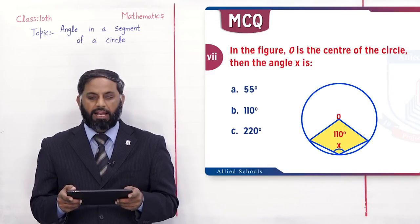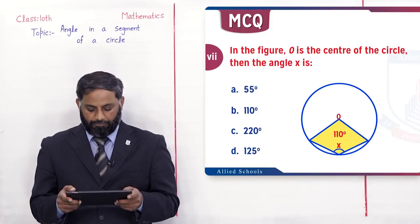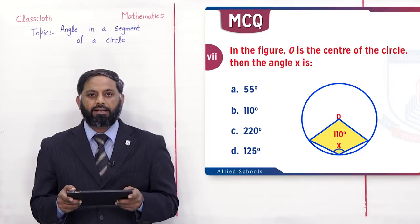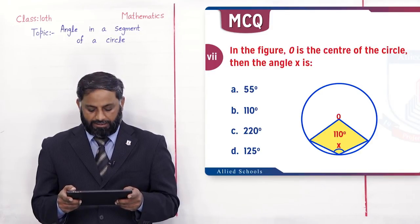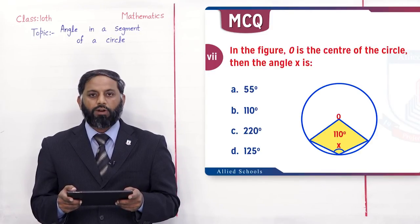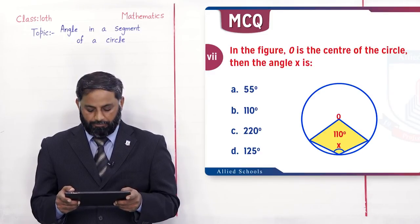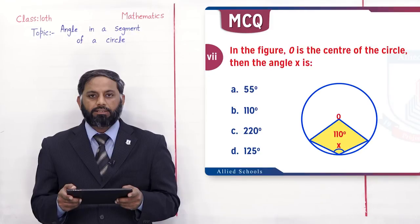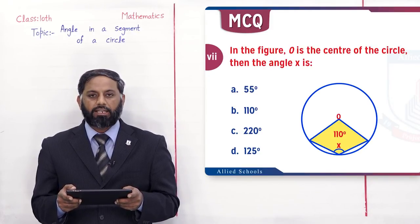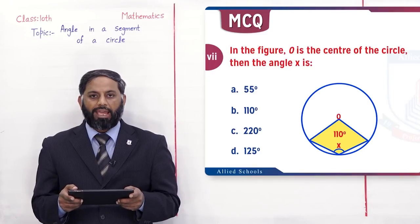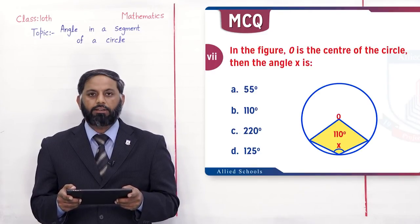Angle x circumscribed angle ہے۔ اس circumscribed angle کا central angle find کرنے کے لیے 360° میں سے 110° minus کریں گے تو central angle = 250°۔ Circumscribed angle = central angle / 2 = 250/2 = 125°۔ تو اس MCQ کی D option correct ہے۔